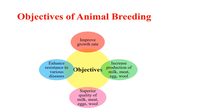Now, let us see what are the objectives of animal breeding. Animal breeding aims at improving the genotypes of domesticated animals to increase their yield and improve the desirable qualities to produce milk, egg, and meat.